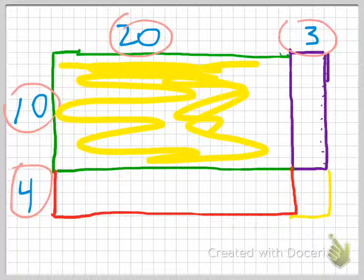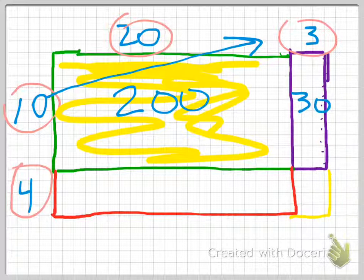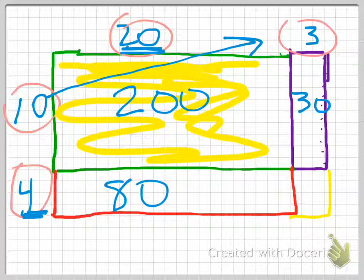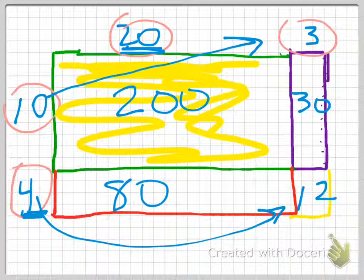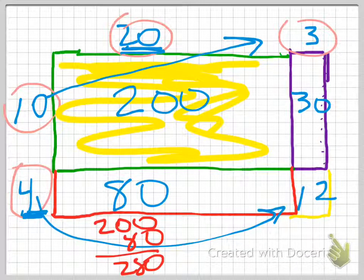What you're really going to come up with is 10 times 20, which is 200. If you go 10 times 3, you get 30. If you take 4 times 20, you're going to get 80. And 4 times 3, you're going to get 12. Here, we just go ahead and add it up. We're going to get 200 plus 80, which is 280. And 30 plus 12, we get 42.